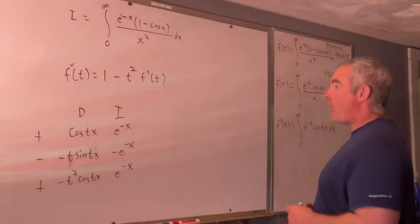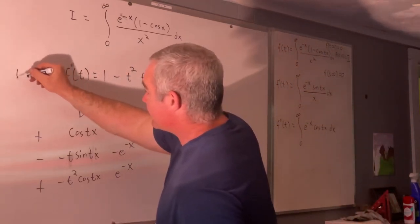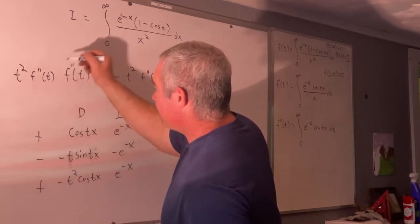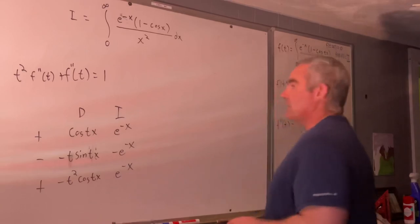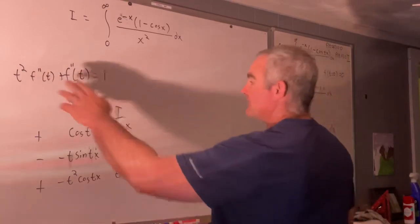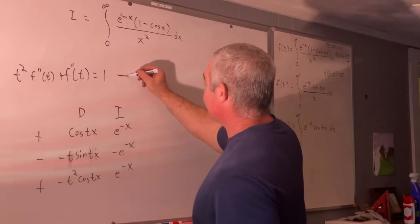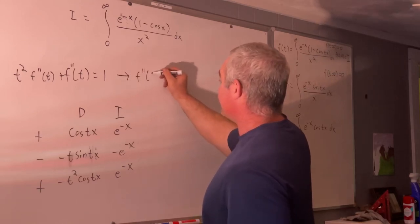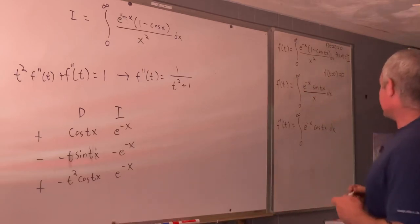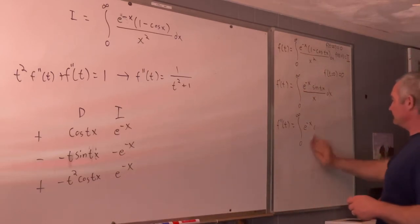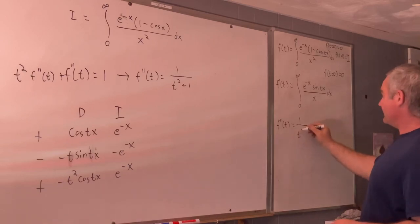We add t squared f''(t) to both sides, giving t squared f''(t) plus f''(t) equals 1. Factoring out f''(t) gives (t squared plus 1) f''(t) equals 1. Dividing both sides by t squared plus 1, we get that f''(t) is equal to 1 over t squared plus 1.